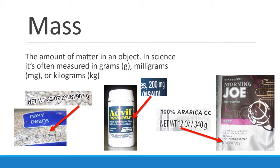Mass is a measure of matter — how much matter something has. It is often used interchangeably with the word weight, and for our purposes we're okay with that. I can hear people screaming across the continent already. Put your comments — polite please — below the video and we can talk about it. But for our purposes, mass and weight are going to be used interchangeably.